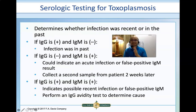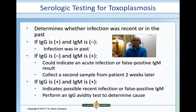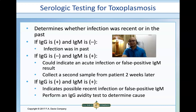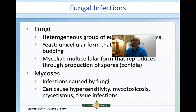Serologic testing is available for toxoplasmosis and determines whether infection was recent or in the past. If IgG is positive while IgM is negative, it indicates past infection. If IgG is negative while IgM is positive, it could indicate acute infection or a false-positive IgM result — requiring confirmation with a second sample two weeks later. If both IgG and IgM are positive, it indicates possible recent infection or a false-positive IgM reaction. An IgG-avidity test can be used to determine the cause.